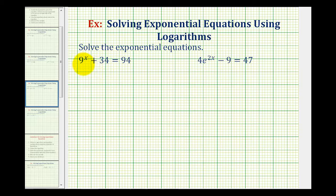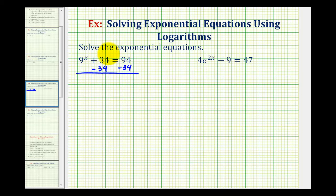Looking at our first equation, we have 9 raised to the power of x plus 34 equals 94. Our first step is to isolate the exponential part — isolate 9 raised to the power of x — so we want to undo this addition by subtracting 34 on both sides of the equation. Now we have 9 raised to the power of x equals 60.